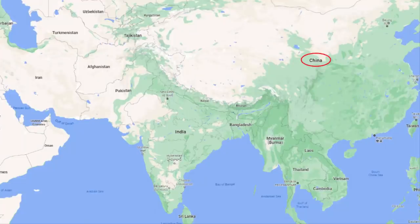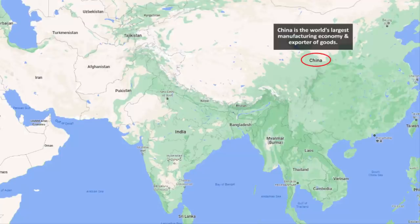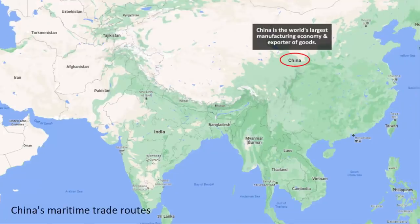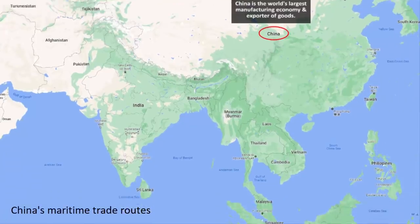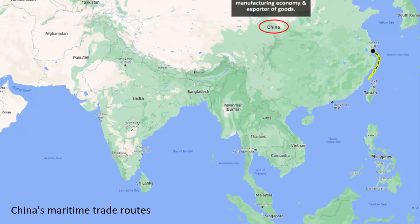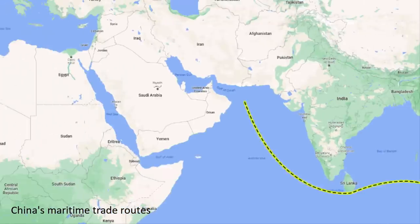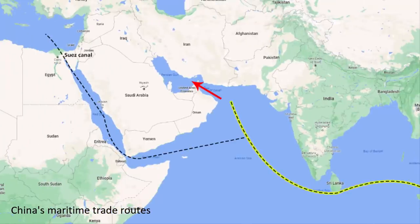With the help of a map, I will show you the trade routes of China. Because China is the world's largest manufacturing economy and exporter of goods, China uses its economic power to take control of foreign lands and territories. The maritime trade route starts from the South China Sea, then the Malacca Strait, then the Indian Ocean, the Arabian Sea, and from here it goes into the Gulf countries and European countries.